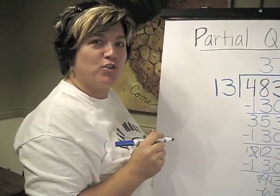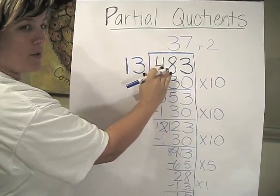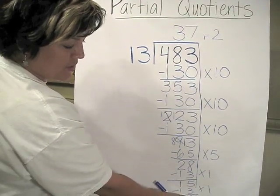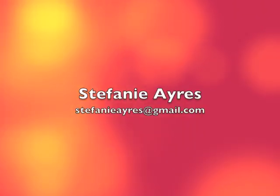So there you see partial quotients—how we just a little bit at a time subtract from the original dividend until we get down so that our last number is smaller than our divisor.